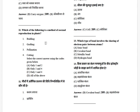Which of the following is a method of sexual reproduction in plants? The options are: budding, grafting, pollination, and cutting. The answer is all of the above.